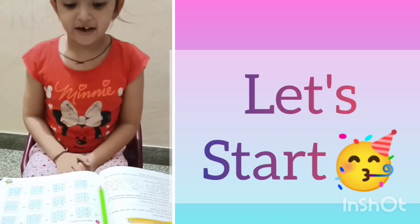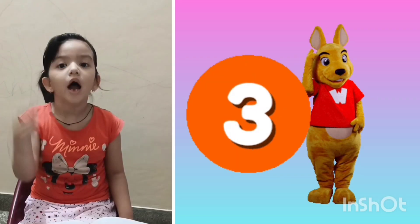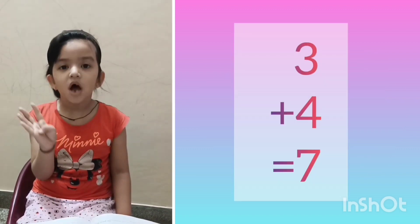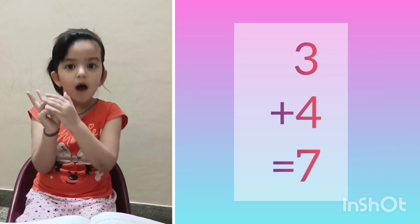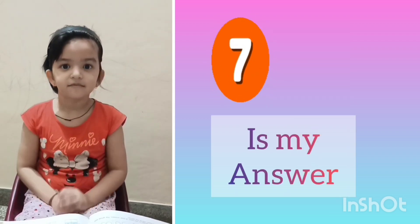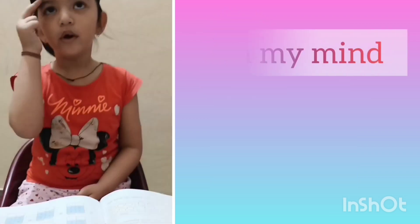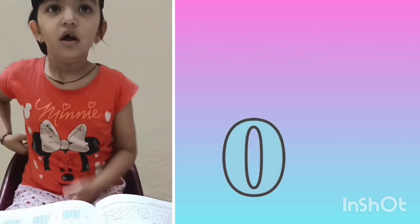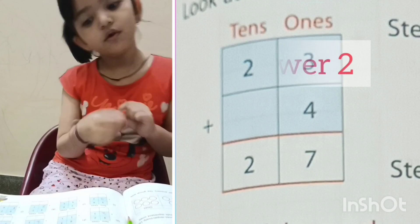Let's start. 4 in my finger, count after 4: 5, 6, 7. 2 in my mind, 0, 2.